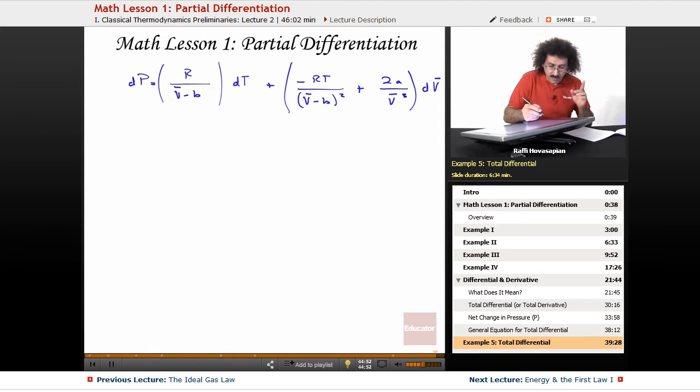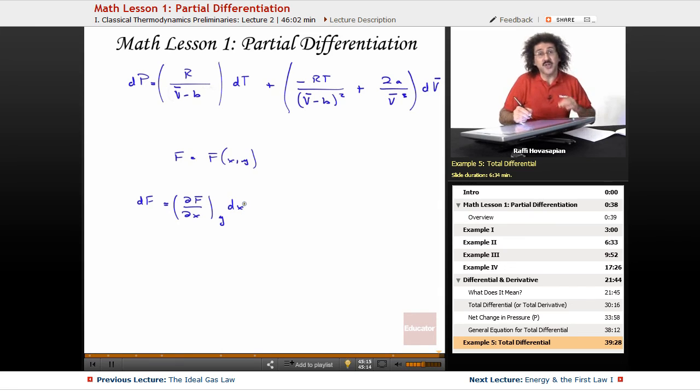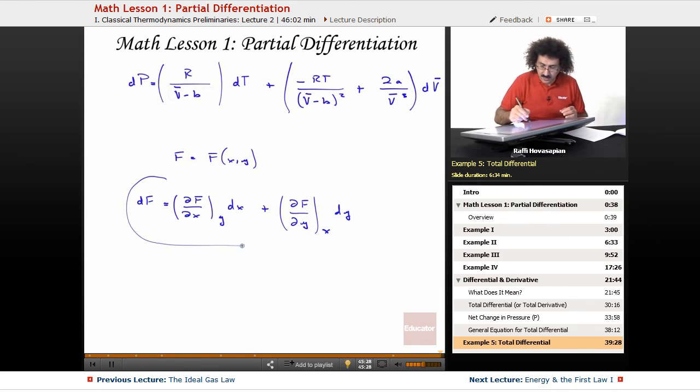And again, it's all based on given a function of two variables. The total change in that function when you vary both variables simultaneously is df/dx holding y constant times the change in x that you make, plus the partial derivative of the function with respect to y times the change in y that you make. That's it.